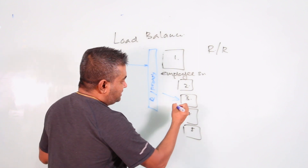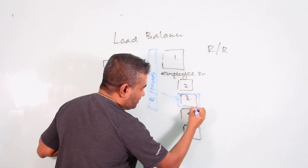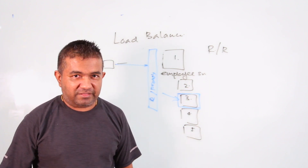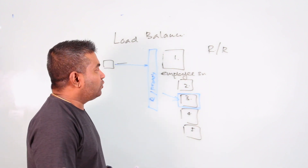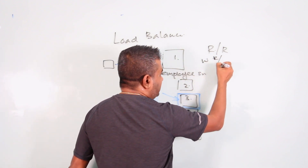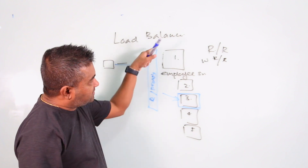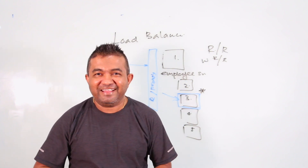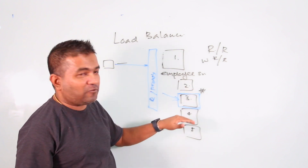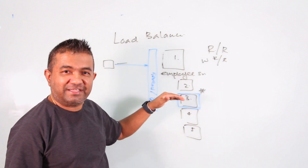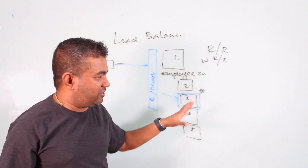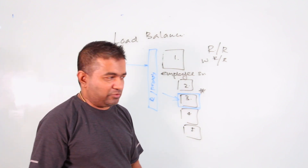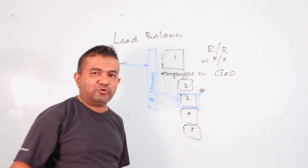But let's say one server is a high-performance server — it has more memory and can handle double the load of the others. There's an option called weighted round robin. We still do round robin, but we treat that server specially and give it more traffic. So instead of purely sequential, it might go one, two, three, three, three, four, five — that server gets more load.